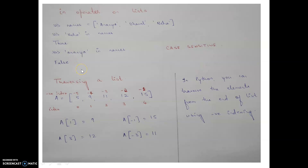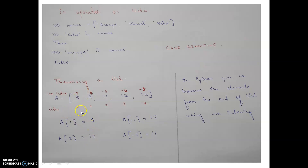When traversing a list, for a list 'a' with five elements, positive indexing gives: a[0] = 5, a[1] = 9, and so on. Negative indexing starts from the right end, always beginning with -1, going to -2, -3, -4, and -5. With negative indices you are starting from the right end, so the value being highlighted at a[-1] is 15.